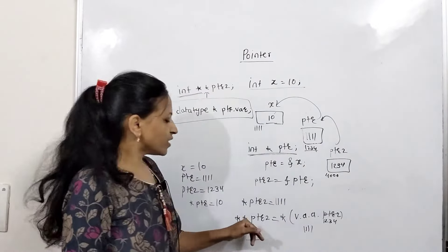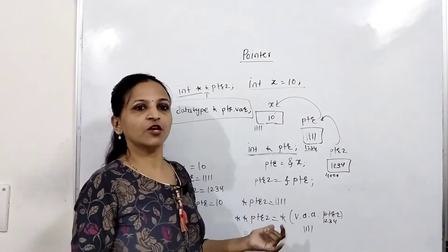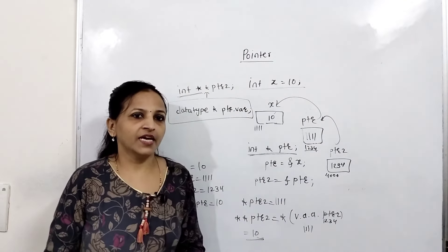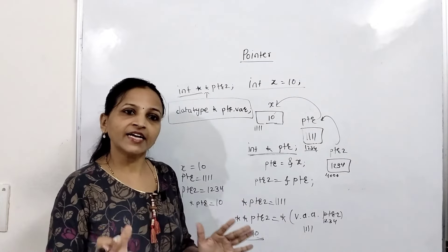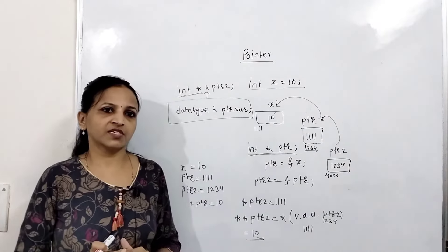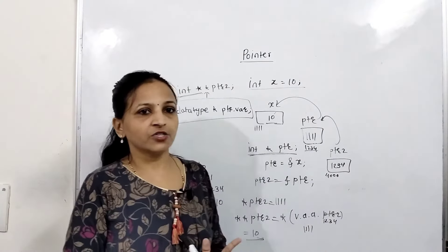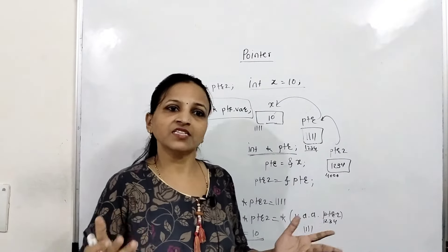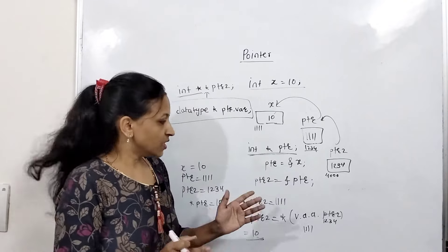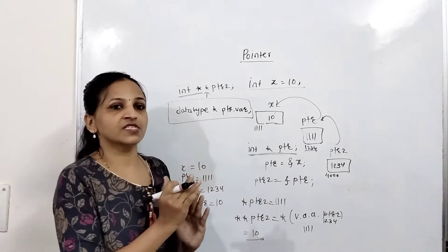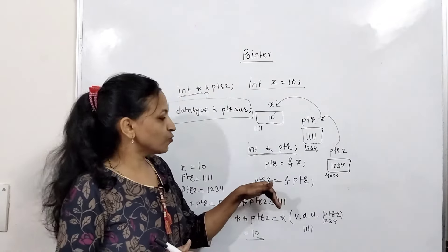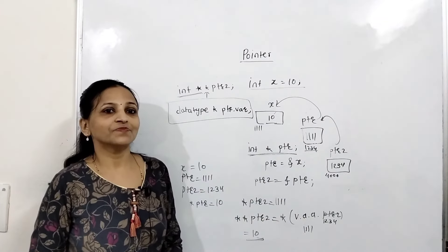Getting it? If we use the dereferencing operator two times with a pointer to pointer, we get the value of the original variable. This is the pointer to pointer concept. So here we have seen that a pointer is a variable that can hold the address of any other variable. Pointer to pointer (int **ptr2) holds the address of another pointer variable.